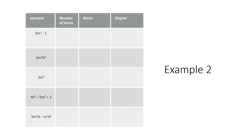Let's try example number 2. The table asks for the number of terms, its name, and the degree. First: 2m to the power of 3 minus 1. There are two terms separated by a minus, so number of terms is 2 and the name is binomial. Since there's one exponent and no others, the degree is 3.